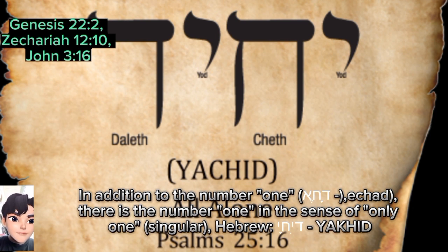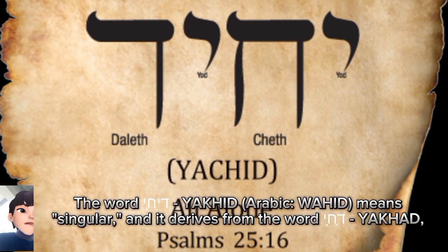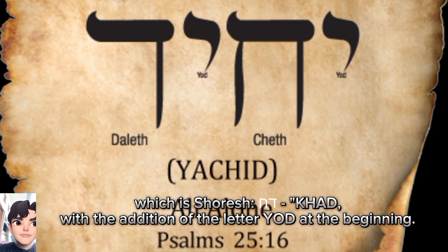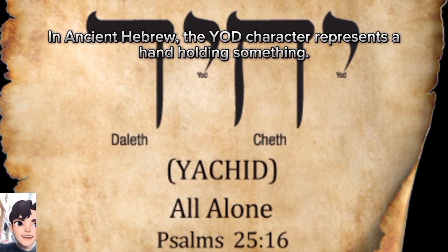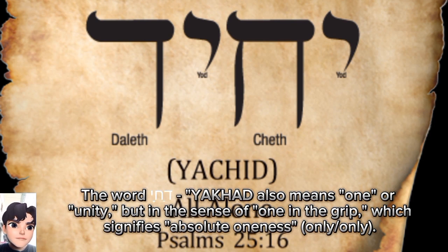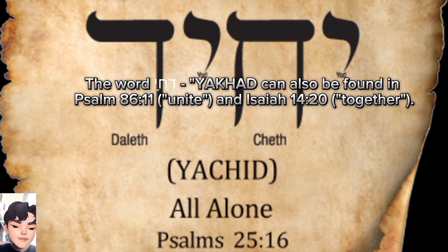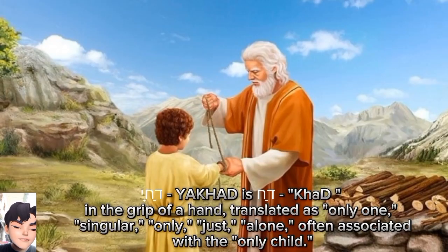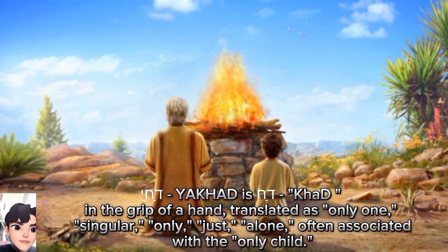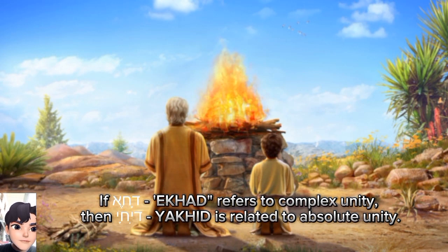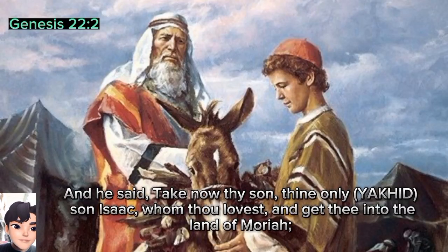In addition to 'echad,' there is the number one in the sense of only one — singular — Hebrew 'yakid' (Arabic: 'wahid'), meaning singular. It derives from the word 'yakad,' with the addition of the letter yad at the beginning. In ancient Hebrew the yad character represents a hand holding something. 'Yakid' means one or unity in the sense of 'one in the grip,' signifying absolute oneness — only, alone, singular — often associated with an only child. While 'echad' refers to complex unity, 'yakid' is related to absolute unity. As in Genesis 22: 'Take now thy son, thine only (yakid) son Isaac, whom thou lovest.'